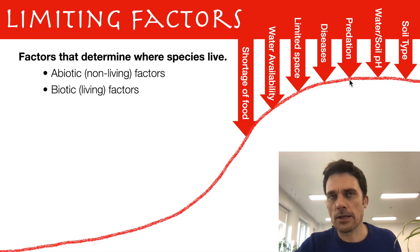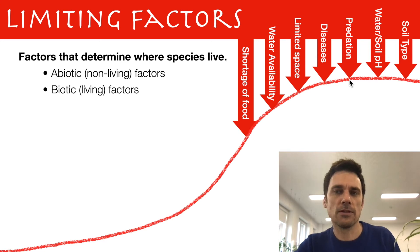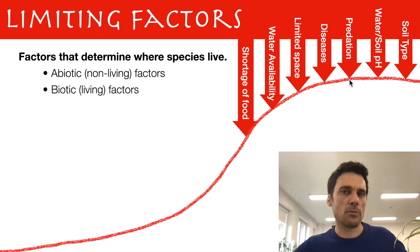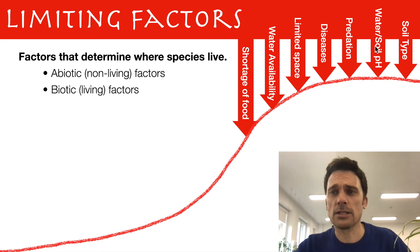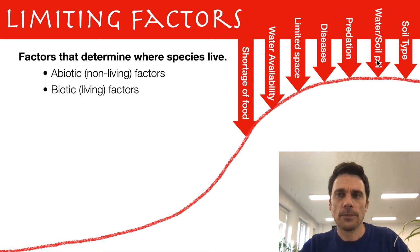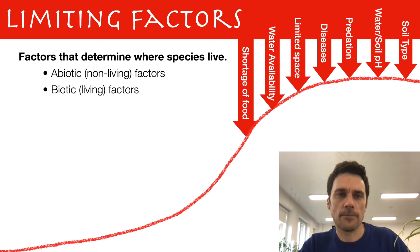Predation — think about zebras in the Serengeti, for example. The number of lions will limit how many zebras there might be. Water and soil pH also change as the climate changes, affecting what can live in that water. Different soil types also limit who can live there.